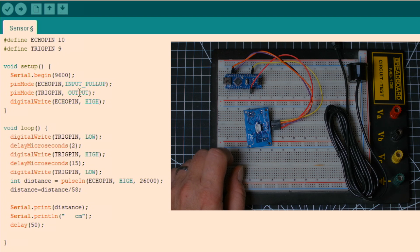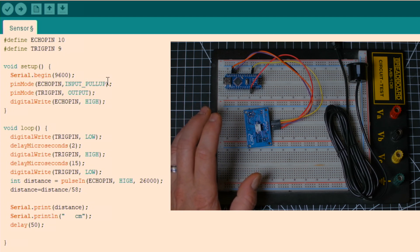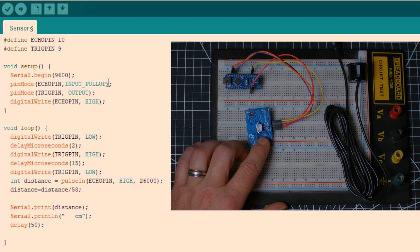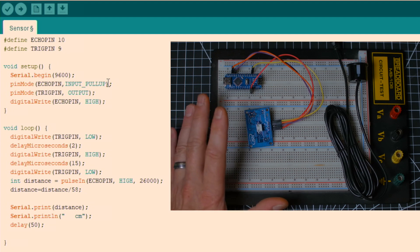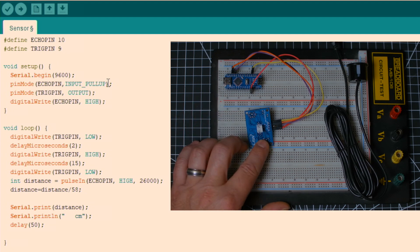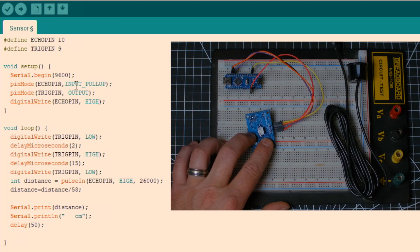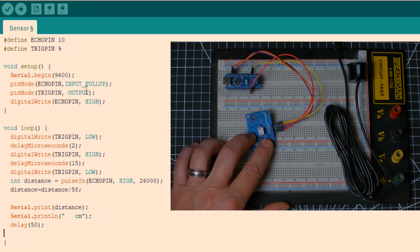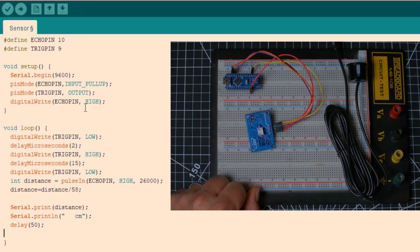Here the pin mode I set to input pull-up because it seems that this module is a little flaky sometimes. But when I put input pull-up in the pin mode of the echo pin, it seemed to resolve most of the problem. So input pull-up here. The trigger pin is an output. That's the one that actually sends the ping out. And we are writing the echo pin to high at the beginning.